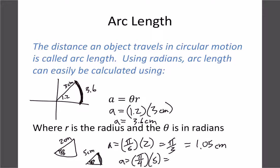So 5 times π/4 gives approximately 3.93 centimeters as our arc length.